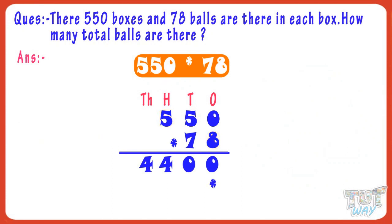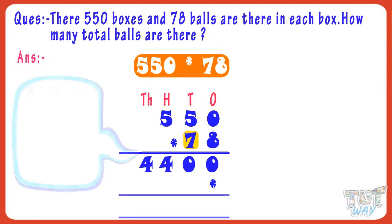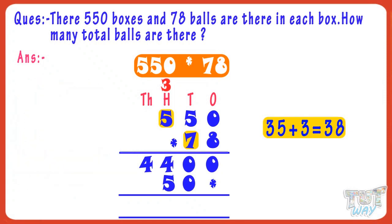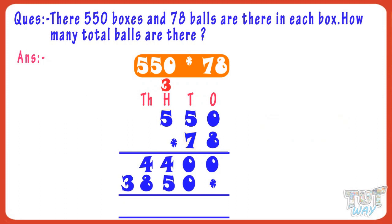Now put a multiplication sign below the ones place digit of the product. Now multiply 550 with the tens digit of 78, that is 7. 7 multiplied by 0 equals 0. Write 0 in the product starting from tens place. 7 multiplied by 5 equals 35 — write 5 in the product and carry over 3 to the hundreds place. 7 multiplied by 5 equals 35, plus 3 carry equals 38. Write 38 in the product.